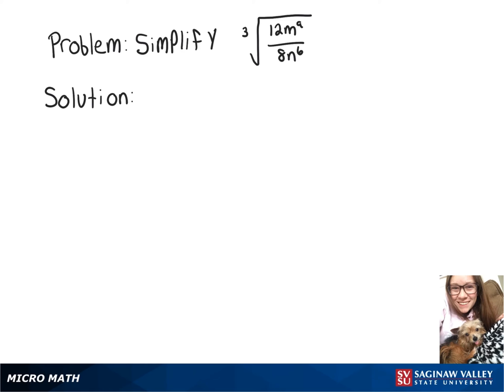We're going to simplify this expression, so let's start by breaking up this cube root, and let's write it as the cube root of 12m to the 9th over the cube root of 8n to the 6th.